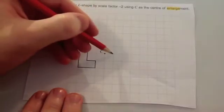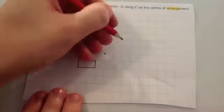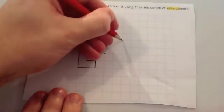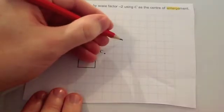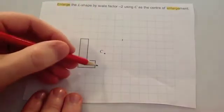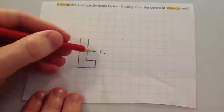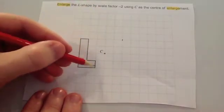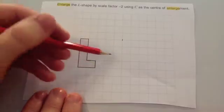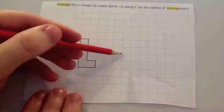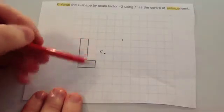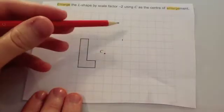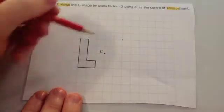So that first point goes to here — 2 right and 2 up from the centre. This next point was 1 to the left and 2 down, so we're going to go 2 to the right, because instead of 1 to the left it becomes 2 to the right. And instead of 2 down, it becomes 4 up, because we're doubling it.